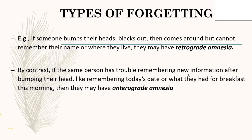An example: if someone bumps their head, blacks out, then comes around but cannot remember their name or where they live, they may have retrograde amnesia — because your name and where you live are past stored memories. After a blackout, if the person can't recollect their name or location, it means it is retrograde amnesia.